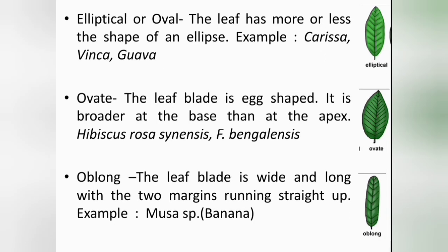Elliptical or oval leaves: the leaf has more or less the shape of an ellipse. E.g., Carissa, Vinca, guava. Ovate leaves: the leaf blade is egg-shaped, broader at the base than at the apex. E.g., Hibiscus rosa-sinensis, Ficus benghalensis. Oblong: the leaf blade is wide and long with two margins running straight. E.g., Musa species. Rotund or orbicular leaves: the leaf blade is more or less circular in outline. E.g., lotus.